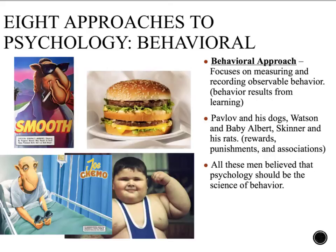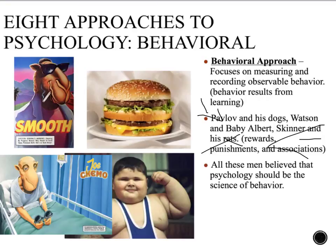We're going to cover behavior and learning in more depth in unit eight. Some names to familiarize yourself with are Ivan Pavlov, who is famous for his work on classical conditioning with the use of dogs; John B. Watson, who worked with Baby Albert; and B.F. Skinner, who worked with operant conditioning using pigeons, with rewards and punishments. All these men believed that psychology should be the science of behavior. When behaviorism was developed, we didn't have MRIs or EEG machines to actually look into the live functioning of the brain, so they thought the only real way to study human learning and mental processes is by observing behavior, which reflects what they know and what they've learned.